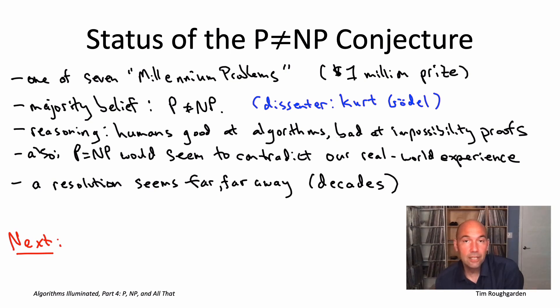The next video will continue this theme of unproven conjectures. We will be looking at two interesting stronger versions of the P not equal to NP conjecture called the exponential time hypothesis and the strong exponential time hypothesis. I'll see you there.